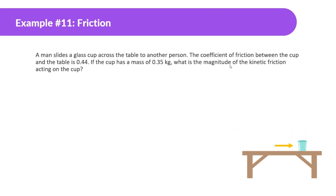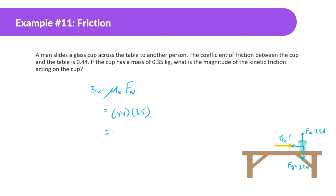Moving on. A man slides a glass cup across the table to another person. The coefficient of kinetic friction between the cup and the table is 0.44. If the cup has a mass of 0.35 kilograms, what is the magnitude of the kinetic friction acting on the cup? Force of gravity is 3.5 newtons, normal force is 3.5 newtons, no force applied because it's sliding. Force of friction kinetic equals μk times normal force: 0.44 times 3.5 gives us 1.54 newtons.